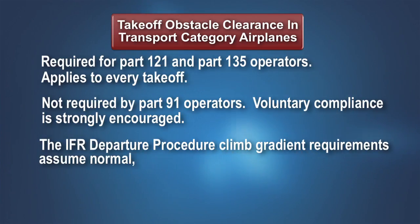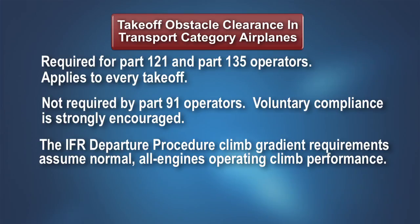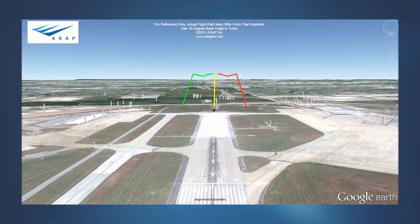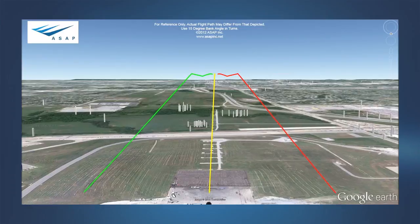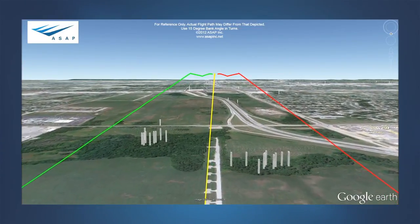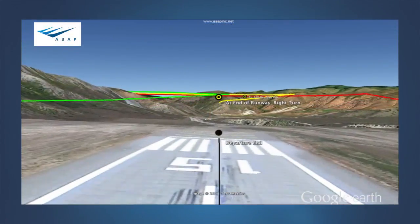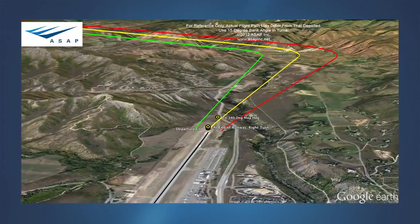The climb gradient requirement published in a standard instrument departure or an obstacle departure procedure assumes normal all-engines-operating performance. Demonstrating that the airplane can meet these climb requirements after an engine failure is not required. If the engine fails on takeoff at or above V1 speed, fly the engine failure procedure — the SID or ATC takeoff climb-out instructions are no longer applicable. Advise ATC of your intentions when it is safe to do so. The determination that safe takeoff obstacle clearance can be achieved following an engine failure is not an easy task. Ask yourself: is this assessment something I can perform before each takeoff? Do I possess the training, tools, and skills to analyze the engine-out performance of my airplane?